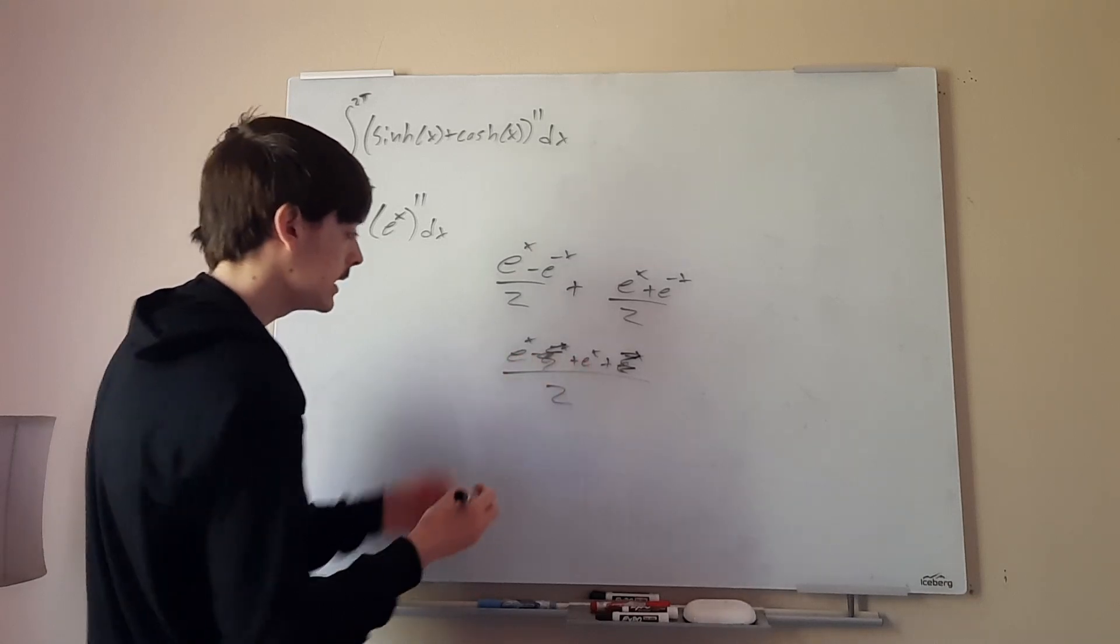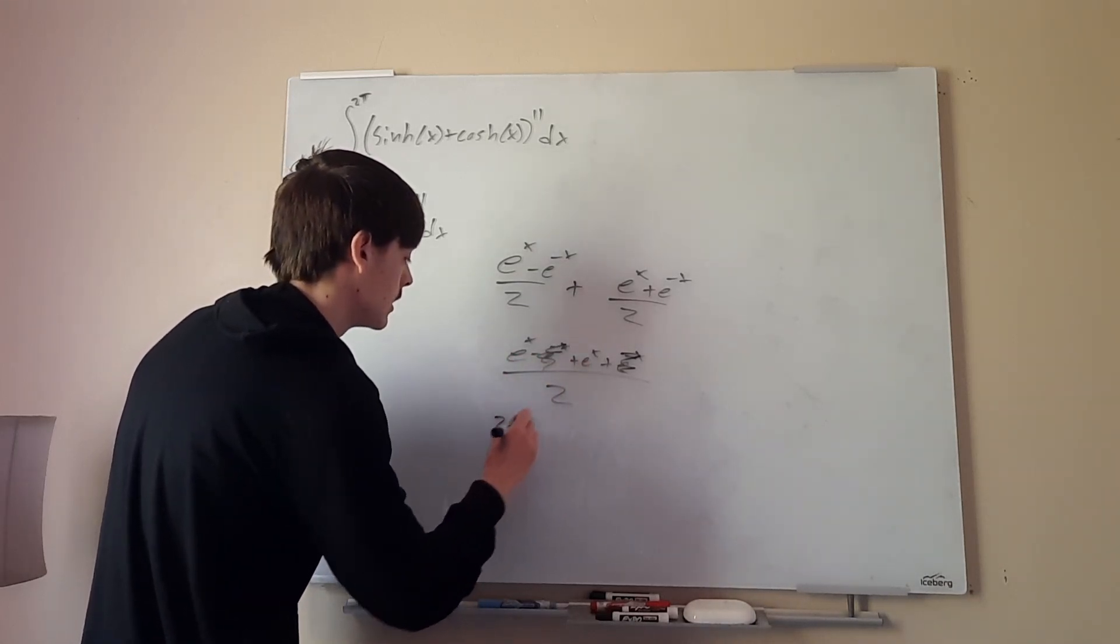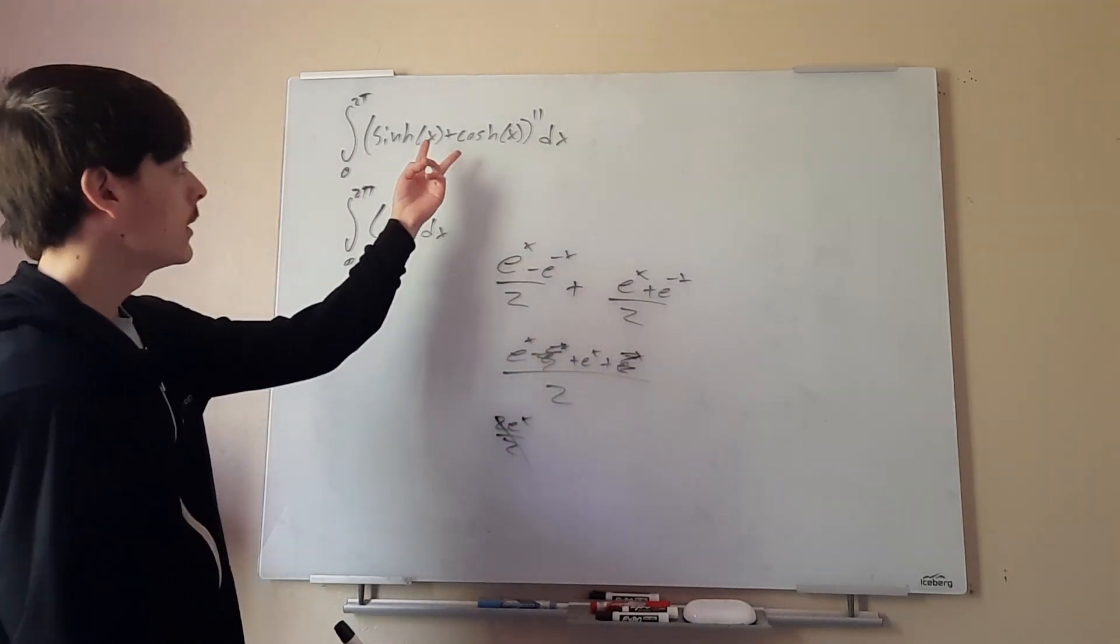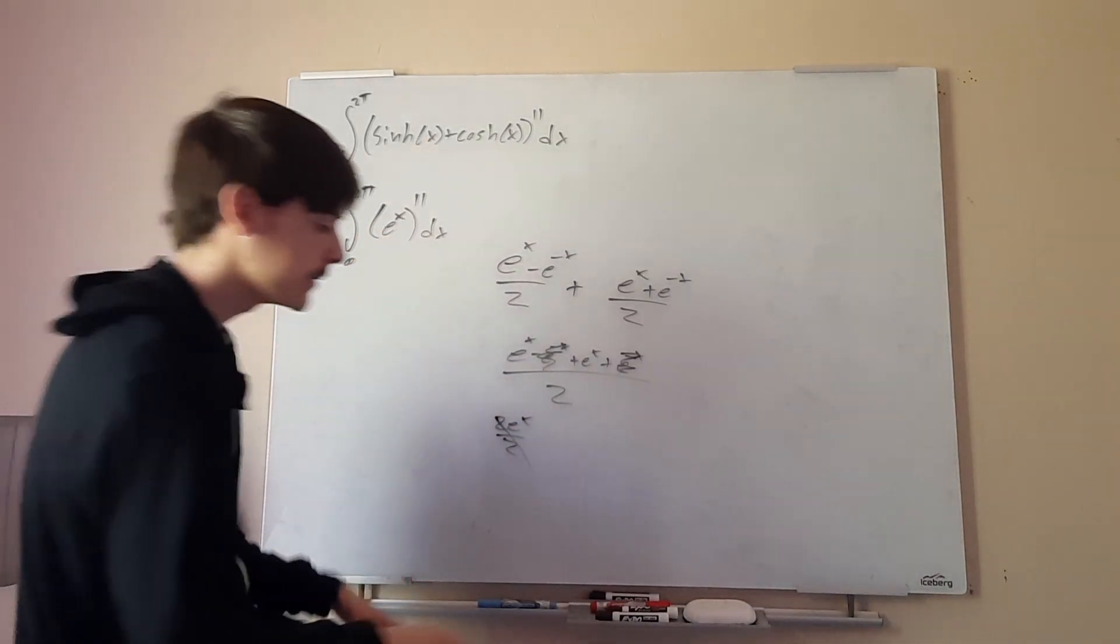And we have 2 of just e^x. So we'll have 2e^x/2. The 2 cancels, so we're left with e^x. So that's where sinh + cosh = e^x comes from.